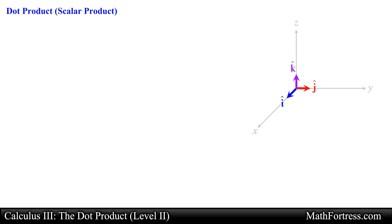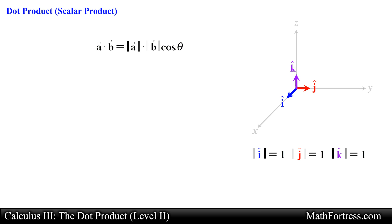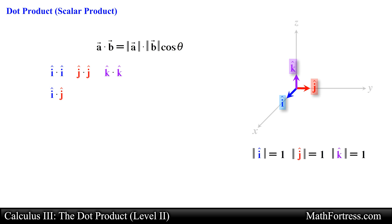This will be pretty easy since i, j, and k all have a magnitude equal to 1 and they are perpendicular to each other. Let's use the geometric definition to find the dot product of all possible combinations between the unit vectors: i hat dot i hat, j hat dot j hat, k hat dot k hat, i hat dot j hat, i hat dot k hat, and j hat dot k hat.